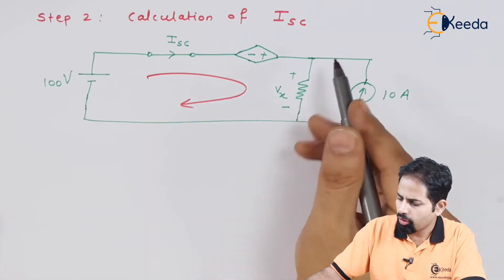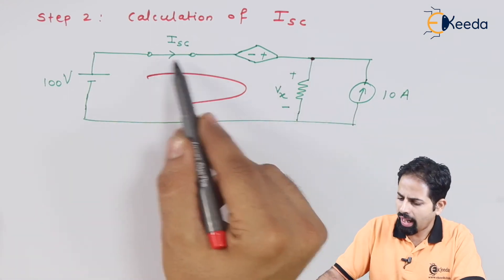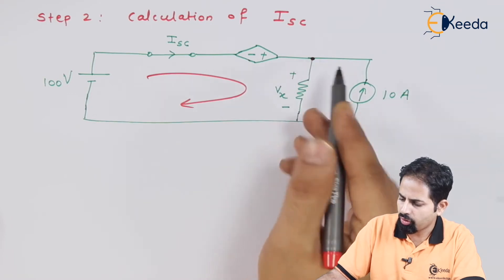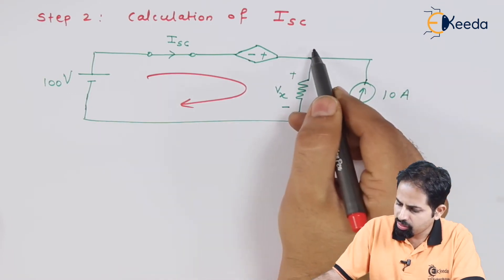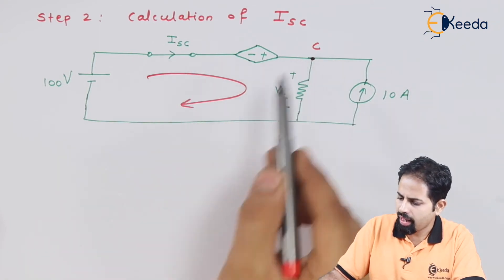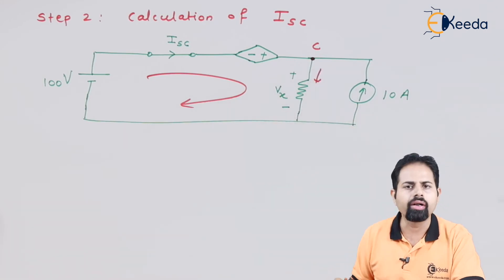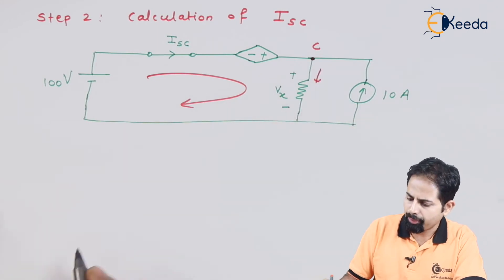And then we also can apply KCL at this node to calculate ISC because ISC is the incoming current for this node. Let's give a name to this node as C. This is incoming current and this ISC also is incoming current. So this we can take as outgoing current. So first we will apply KVL.